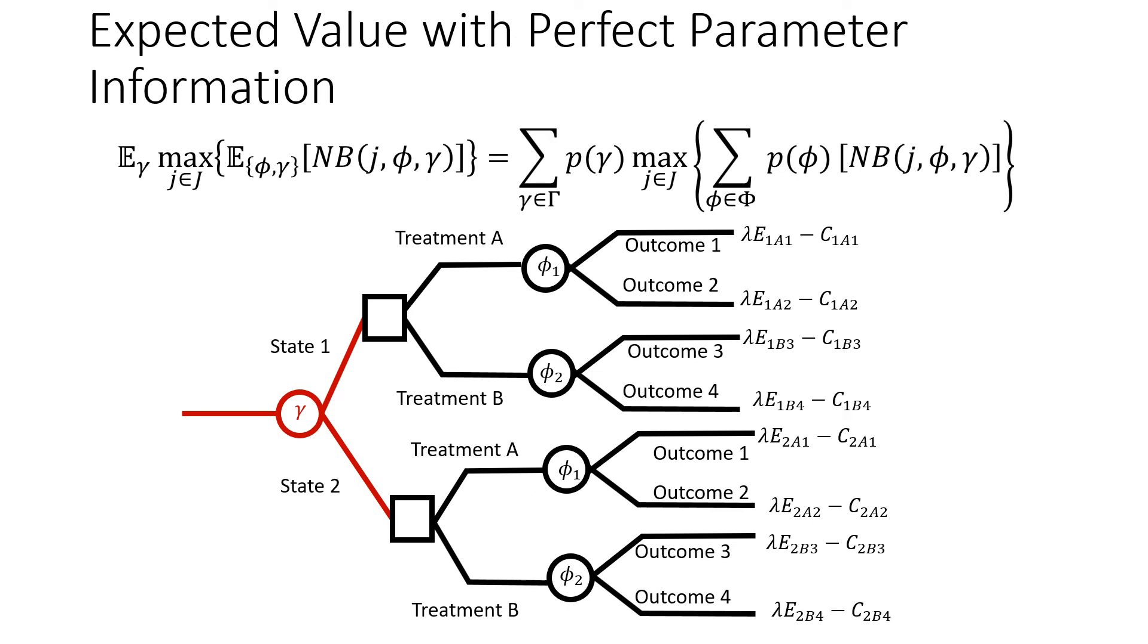So what we effectively do is that we pull this chance node gamma and we pull it to the back when we start talking about the expected value of perfect parameter information. Then we make a decision with respect to each of our treatments with these outcomes in mind.